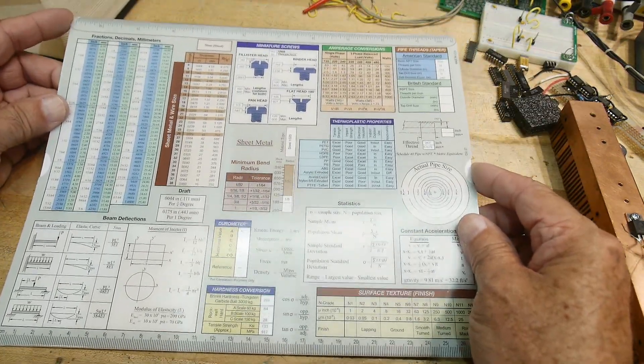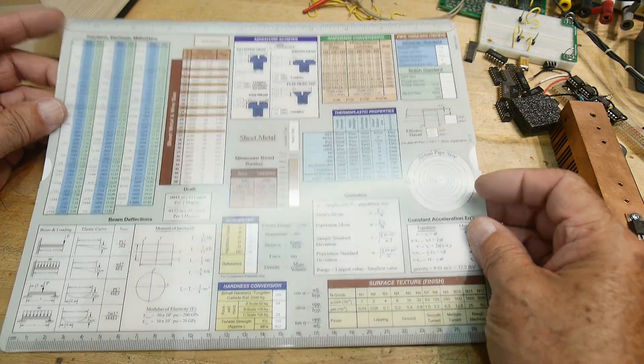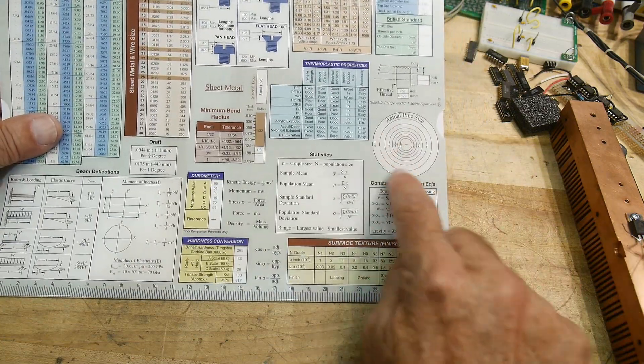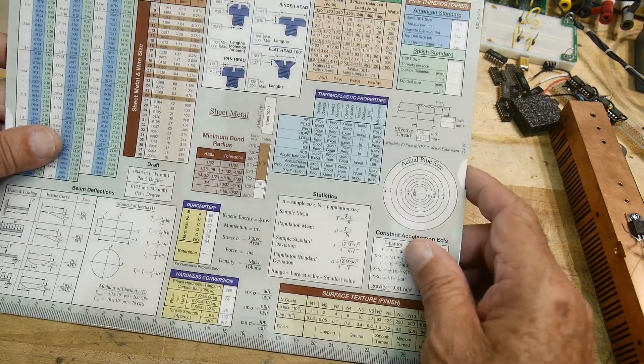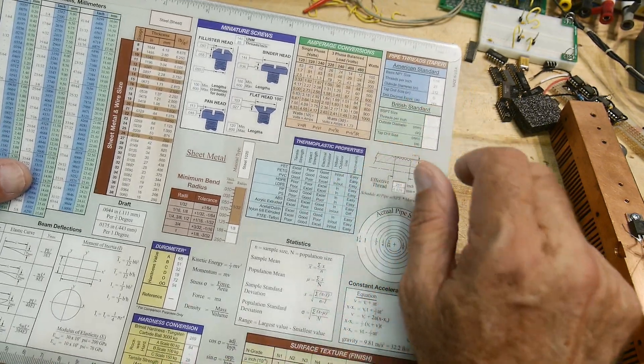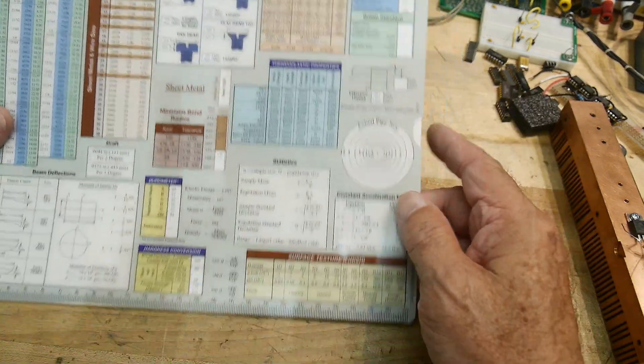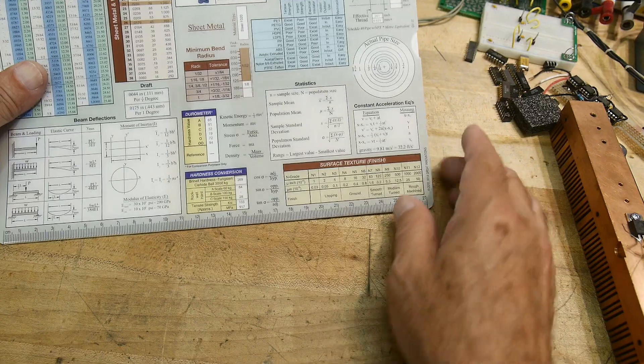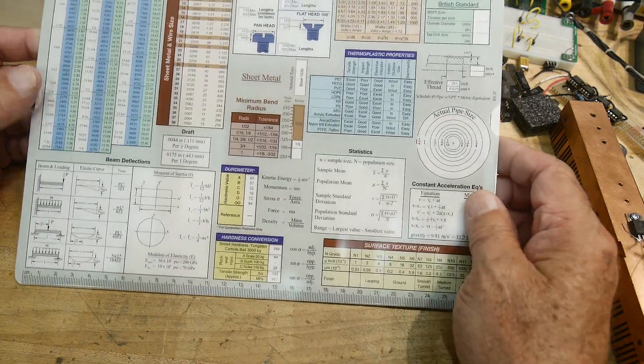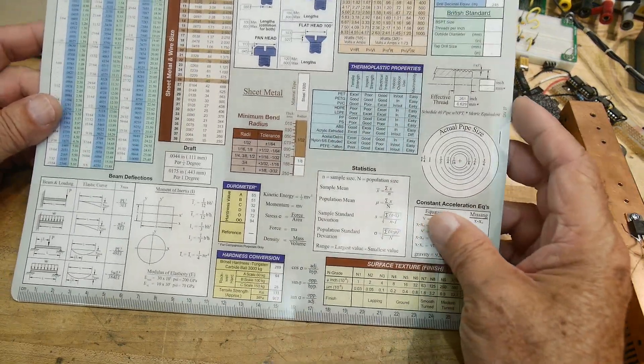And then this one back has a lot of extra stuff in it. My other one didn't. So it has like pipe sizes, pipe threads, tapered threads, British standard. It has just some formulas and stuff to use, bend radius for sheet metal, gyrometer.